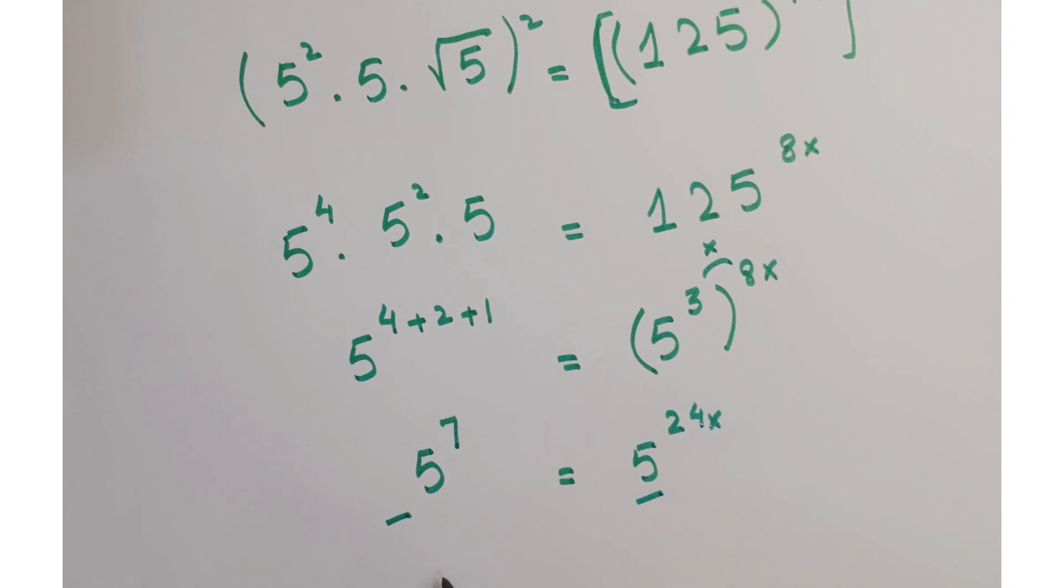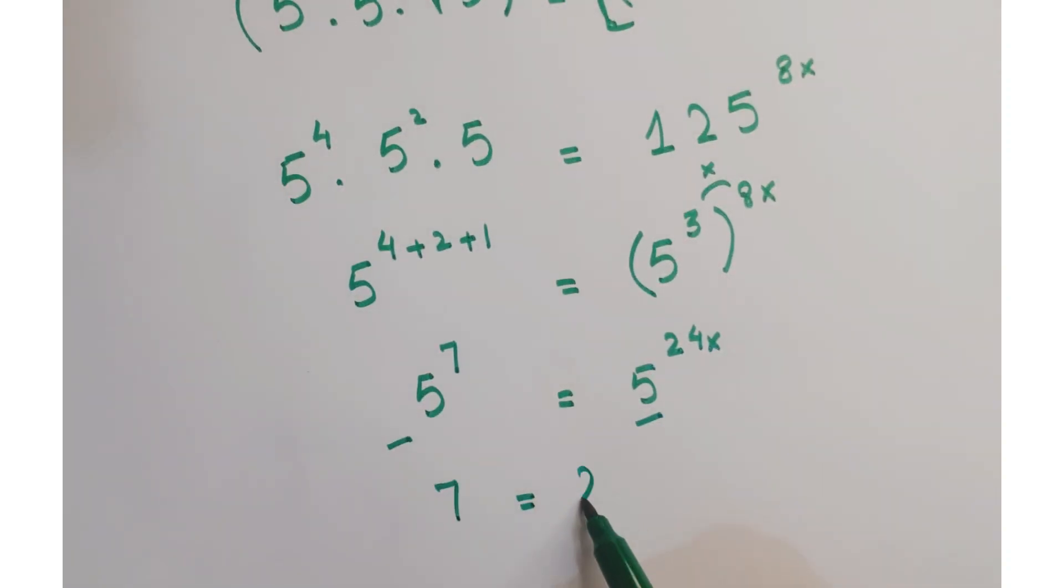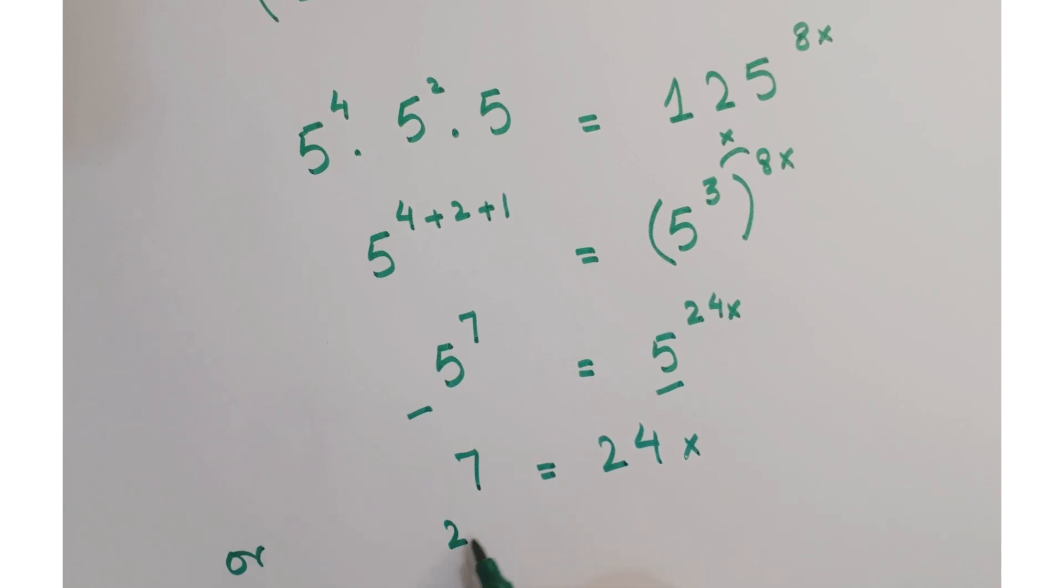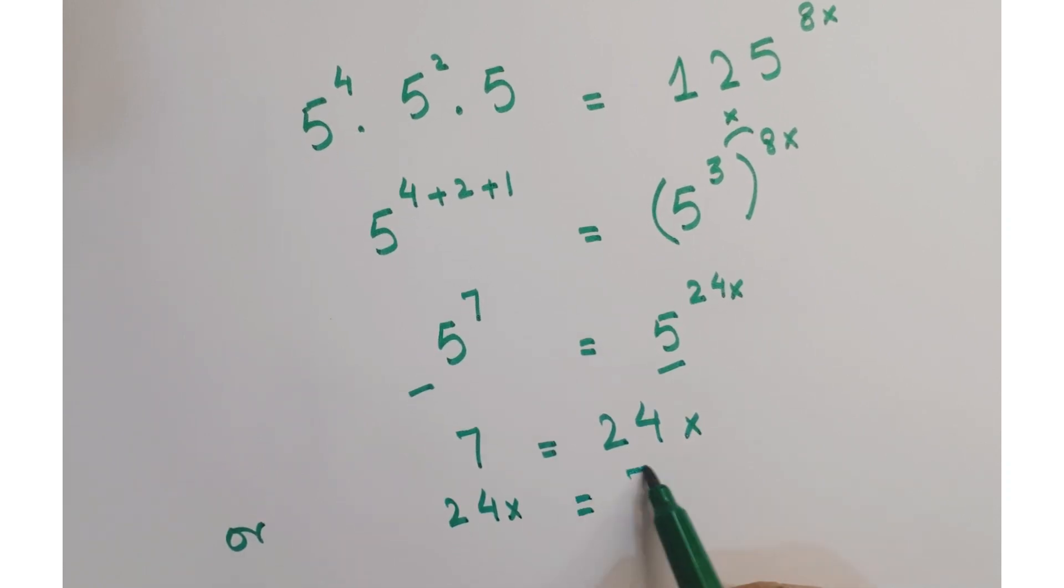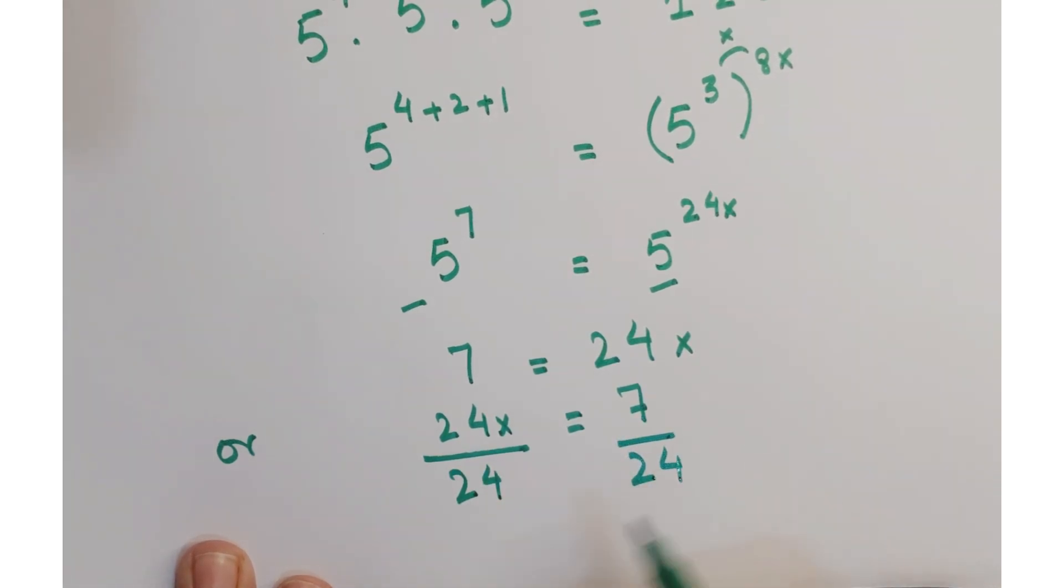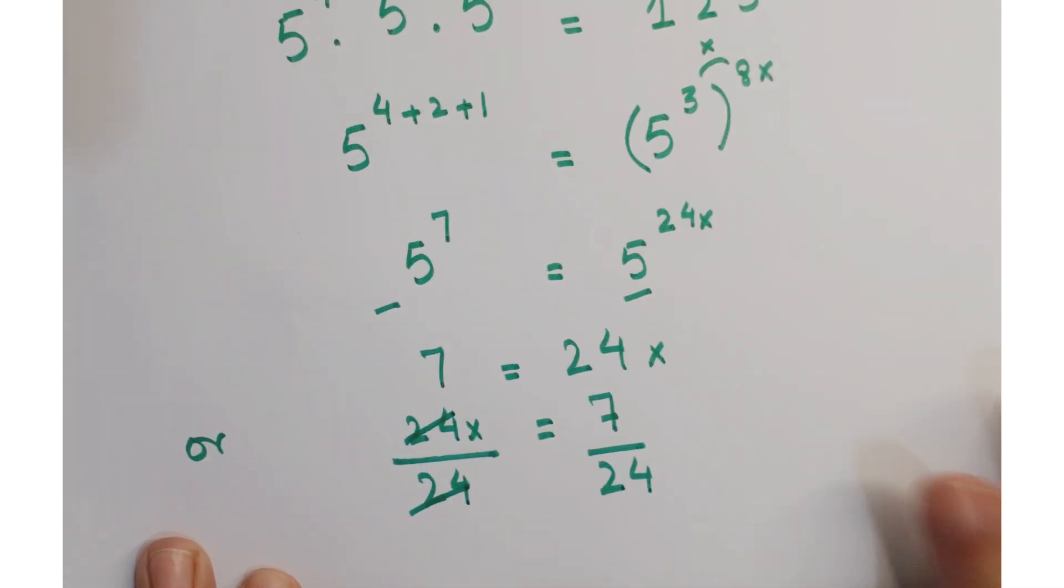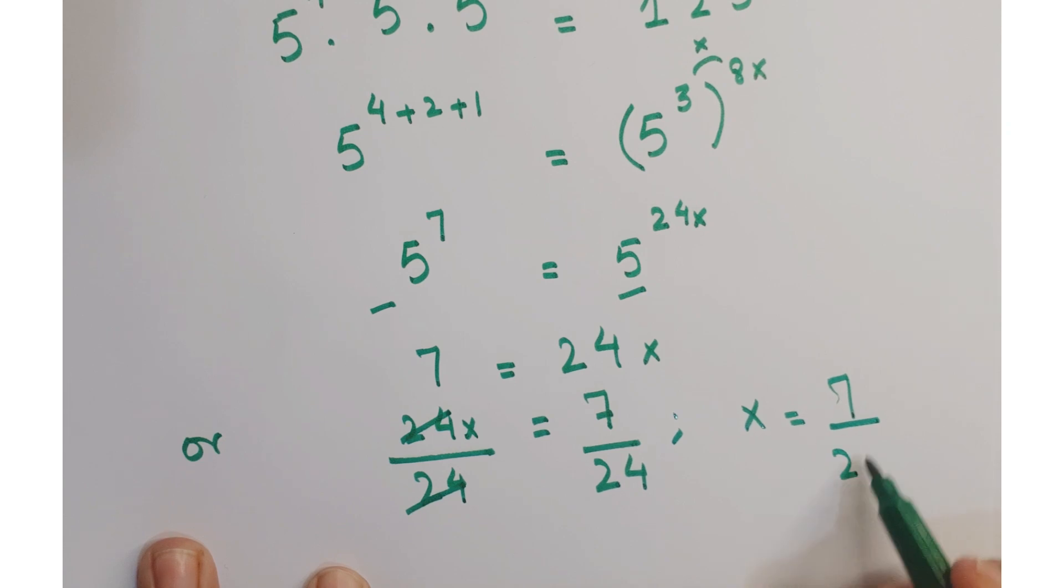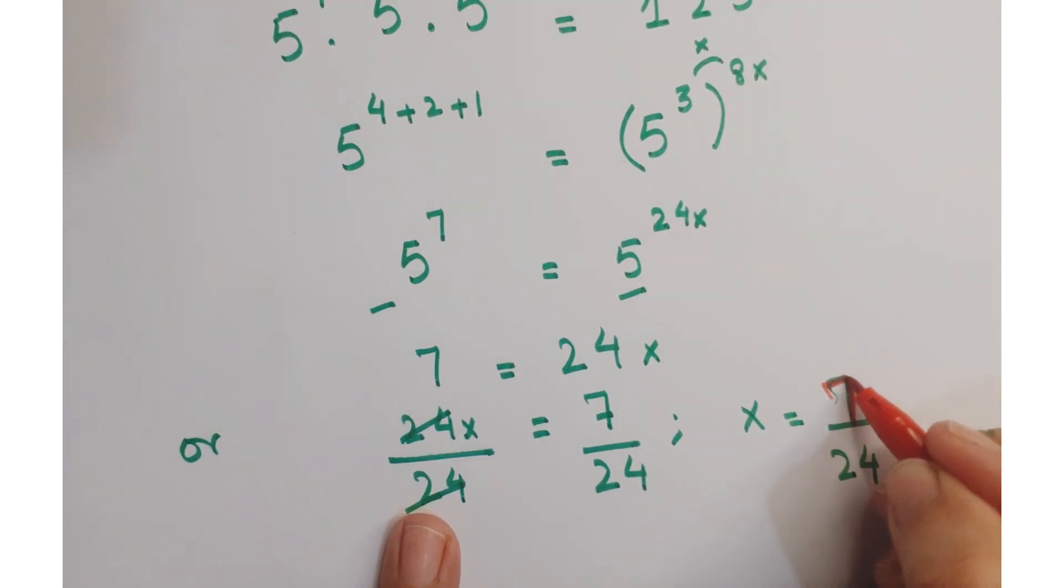Now, bases are same. So just equate their exponents. So we get 7 equals 24x or you can write it as 24x equals 7. Now in order to eliminate 24 from the left hand side, divide by 24 on both sides. This and this gets cancelled. So we get x equals 7 upon 24 and this is our required answer.